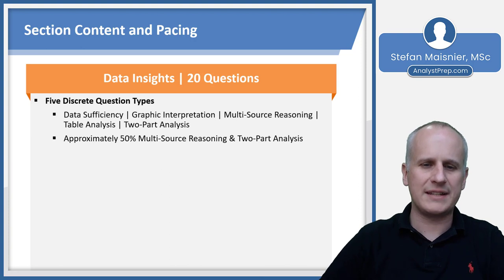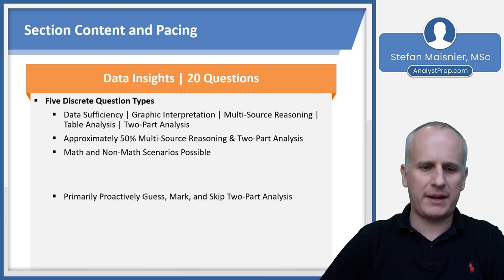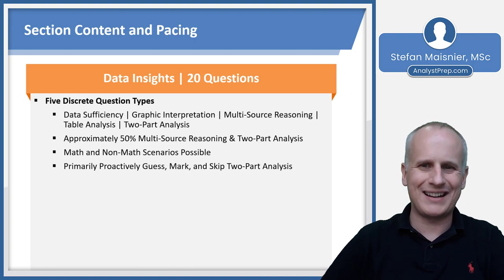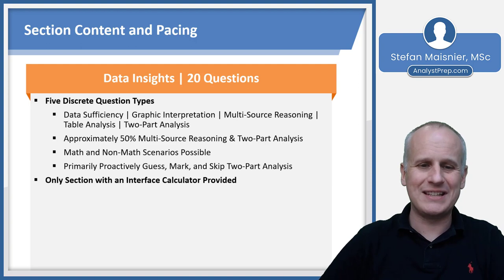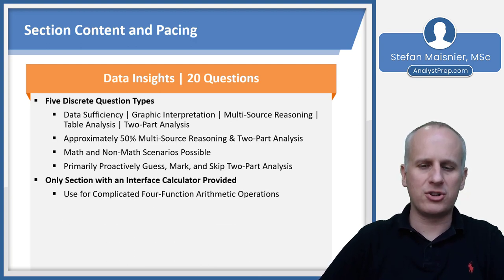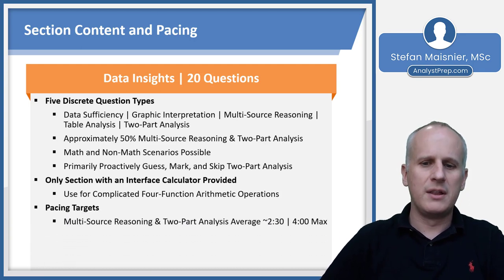Approximately 50% of the Data Insight section will be Multi-Source Reasoning and Two-Part Analysis. Assume there will be two three-question Multi-Source Reasoning sets, with both math and non-math scenarios possible. Primarily proactively guess, mark, and skip Two-Part Analysis if you're behind pace. One of the most important aspects of the Data Insight section is that it is the only section with an interface-provided calculator — really just for complicated four-function arithmetic. The math here does not have to be clean as it is in Quantitative Reasoning; they may ask you to do something like 6,478 divided by 0.13. Do not forget that the calculator exists in the Data Insight section.